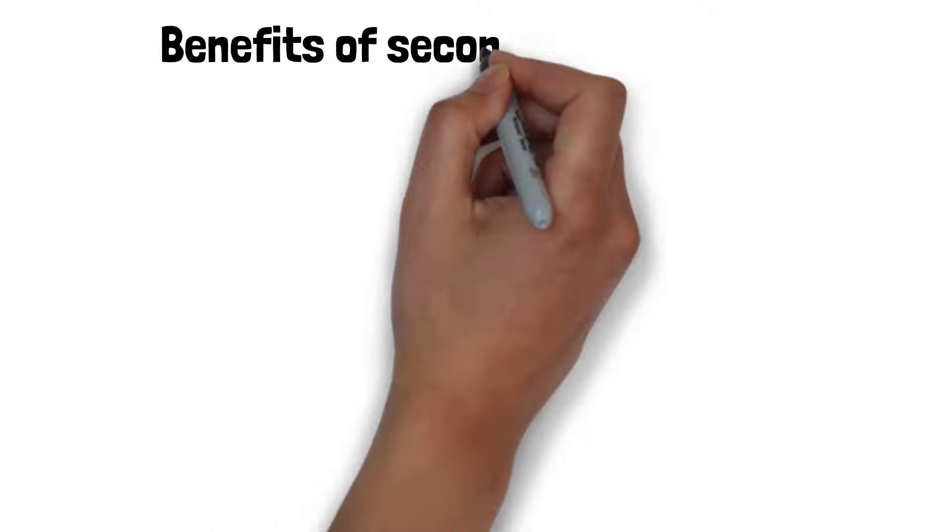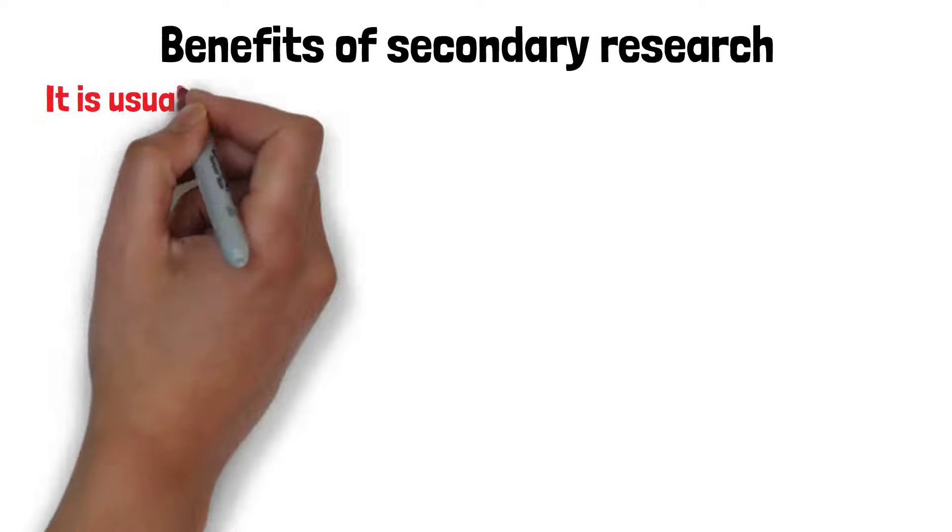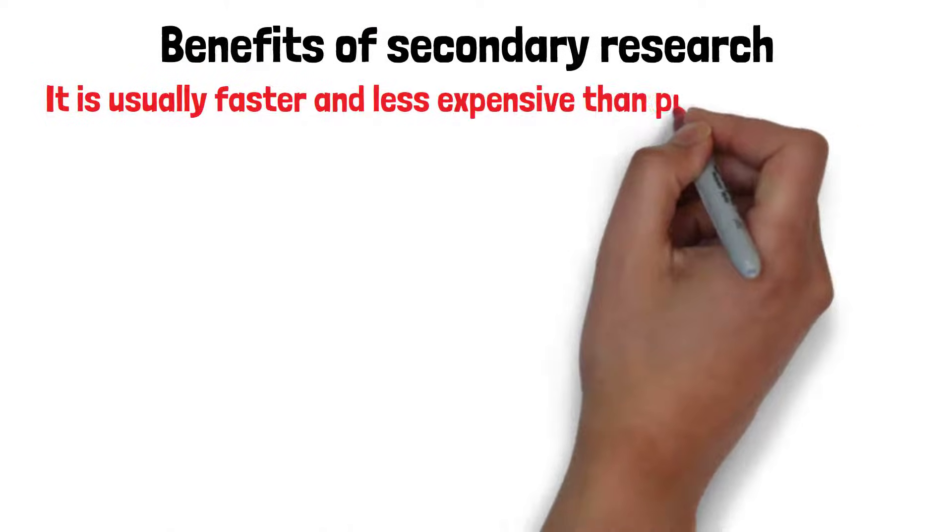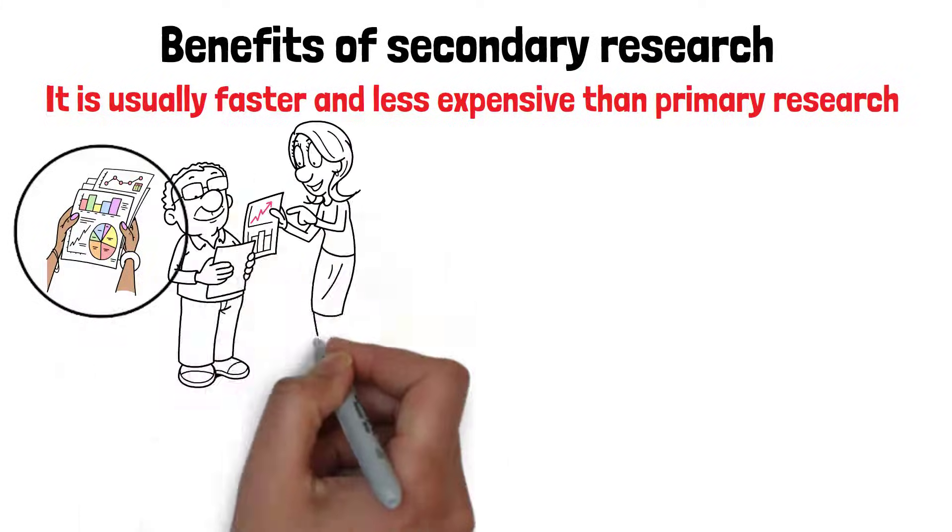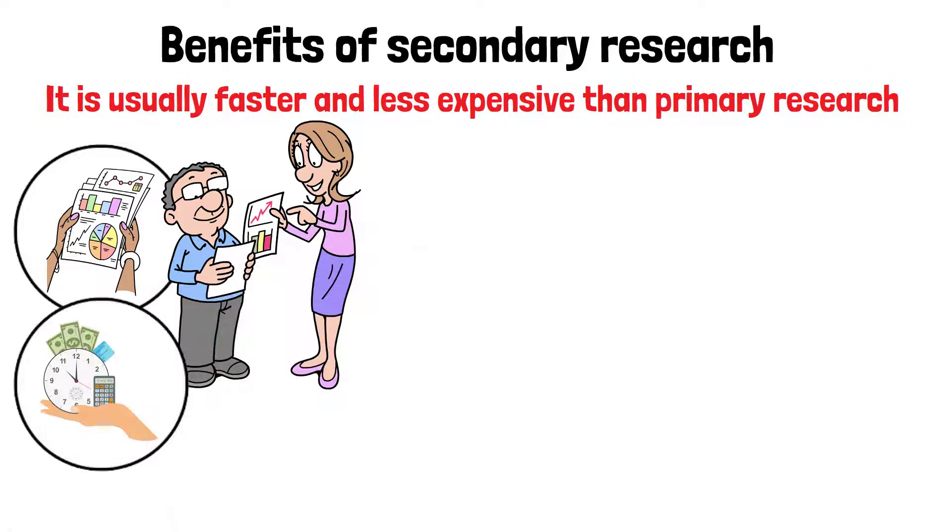One of the main benefits of secondary research is that it is usually faster and less expensive than primary research. Since the data has already been collected and analyzed, researchers can simply retrieve and study it, saving time and money.